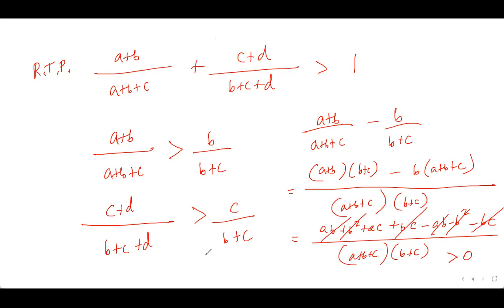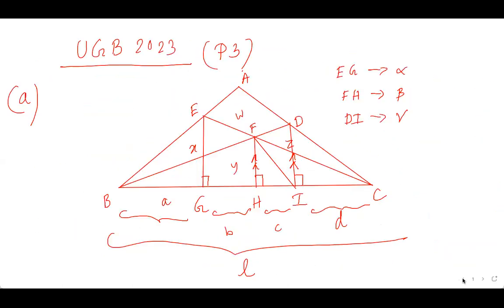Now for part B, we need to find W in terms of X, Y, and Z. We join A and F, splitting the quadrilateral AEFD into two triangles with areas W1 and W2, so W1 + W2 = W.